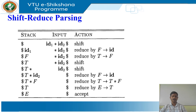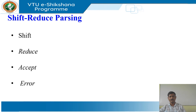Upon entering the configuration where the stack contains the start symbol and the input is empty, the parser halts and announces successful completion of parsing. The configurations of a shift-reduce parser on input id1 * id2 are shown. There are four possible actions in a shift-reduce parser: shift, reduce, accept, and error.